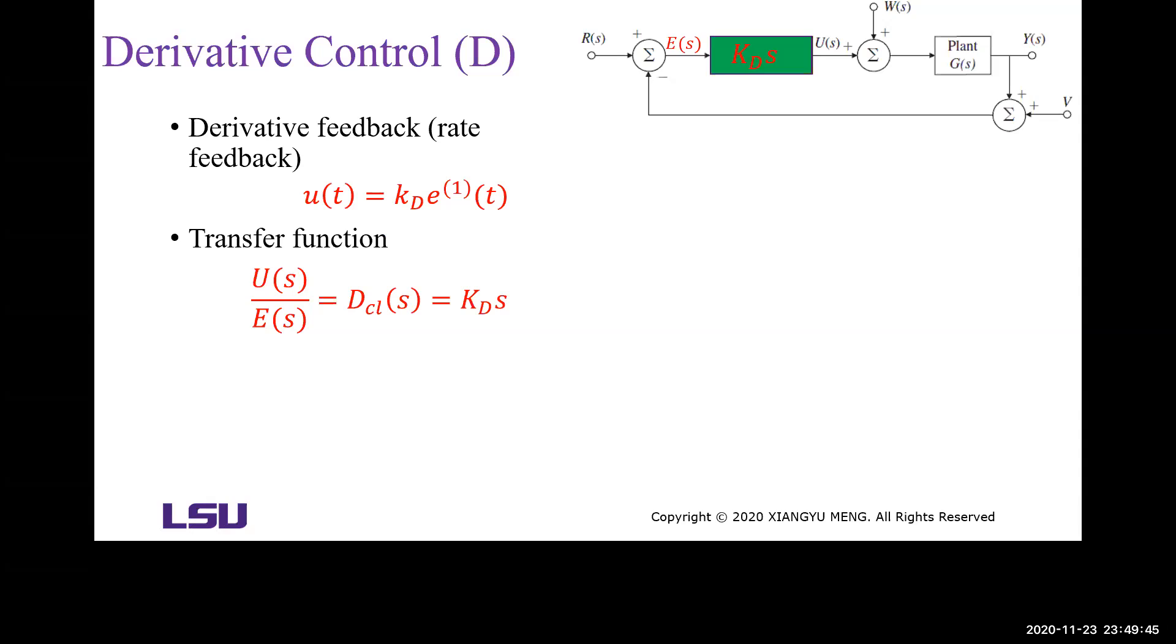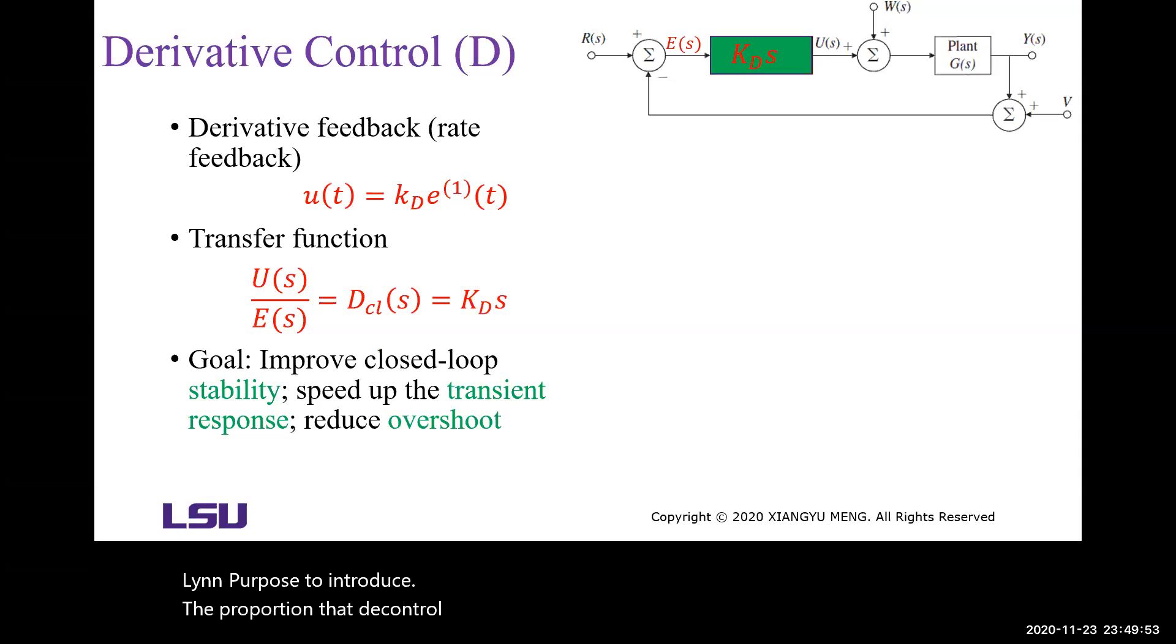The main purpose of introducing the derivative control is to improve the stability. It can also speed up the transient response and reduce the overshoot.